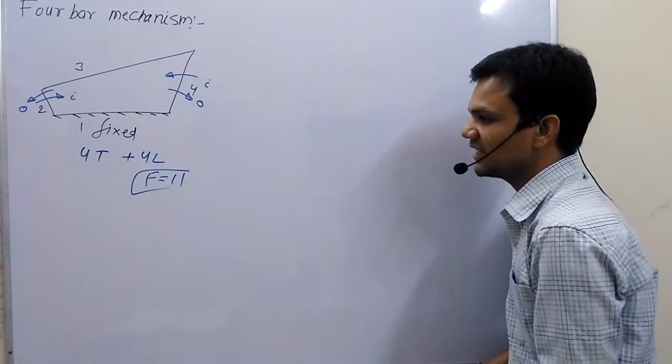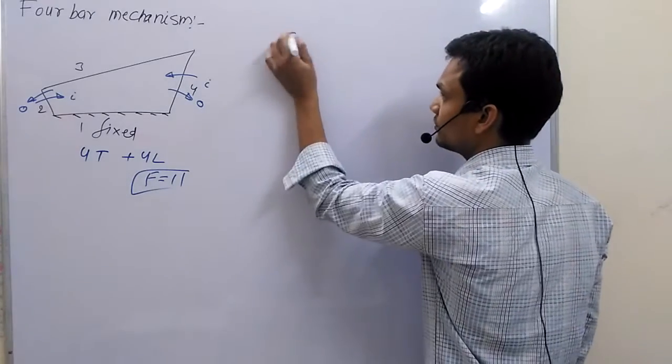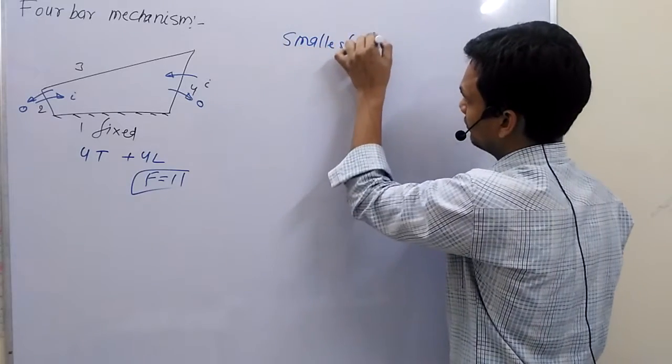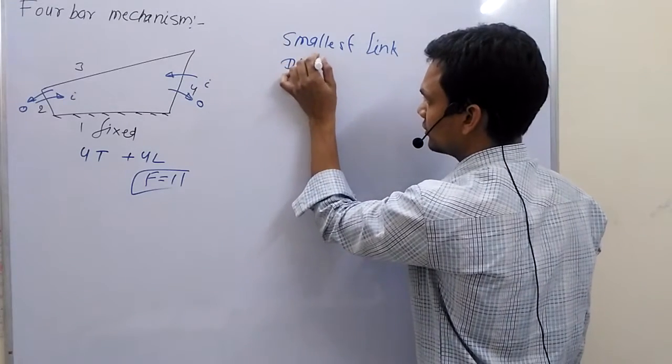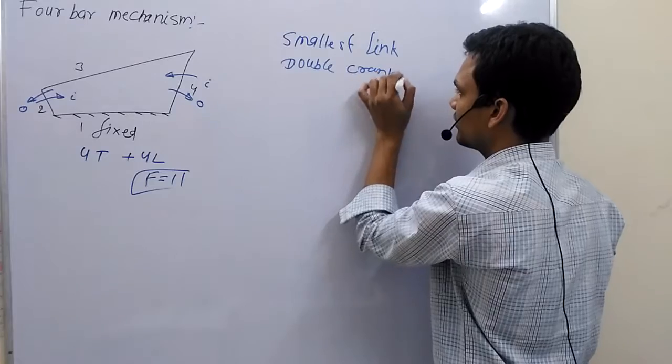Now, in 4 bar chain mechanism, if we take smallest link at fixed position, then we obtain double crank mechanism.